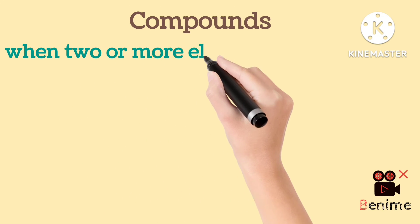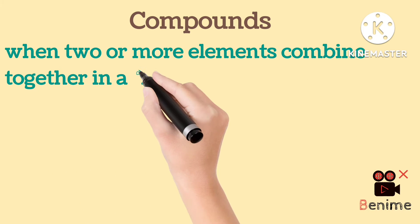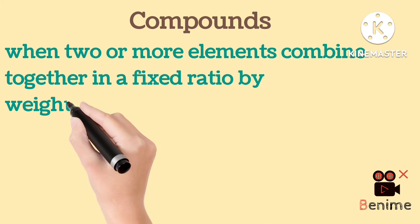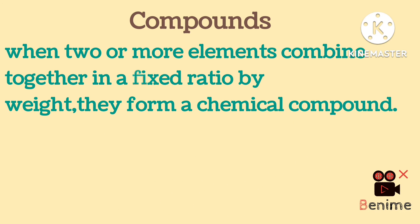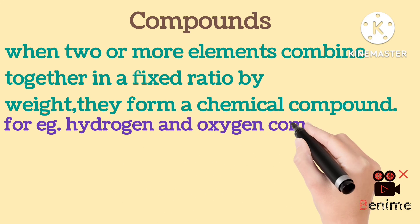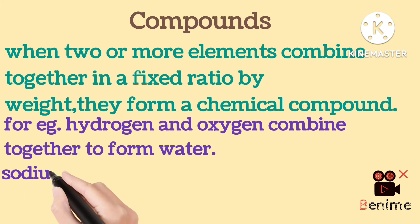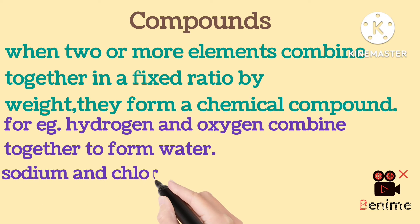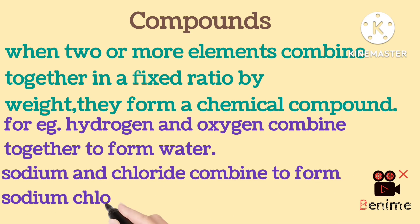When hydrogen and oxygen combine together in a fixed ratio by weight, they form a chemical compound. For example, hydrogen and oxygen combine together to form water, and sodium and chloride combine together to form sodium chloride.